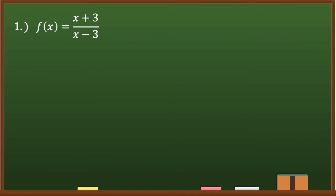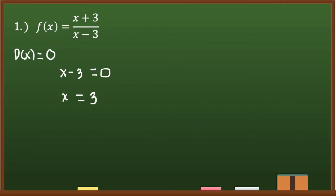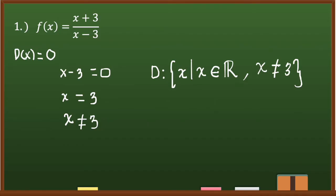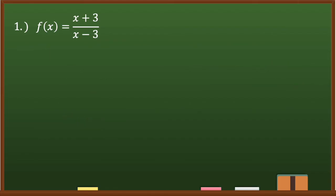Number one: f(x) = (x + 3) / (x - 3). To get the domain, we set the denominator equal to zero: x - 3 = 0, which gives x = 3. Since we cannot have zero in the denominator — that would give us an undefined term — x must not equal 3. Therefore the domain is the set of all x such that x is an element of real numbers where x ≠ 3.